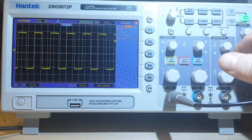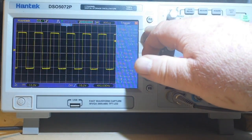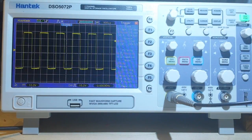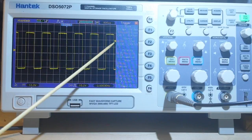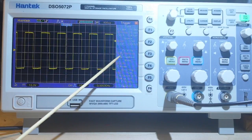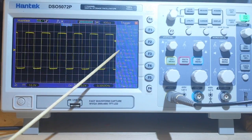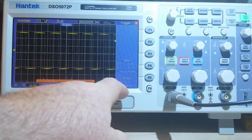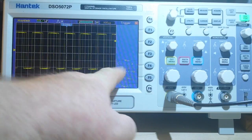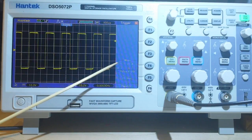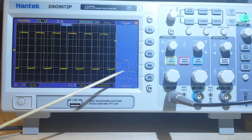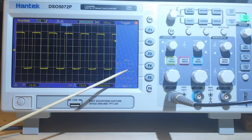And bring up the trigger menu and we're going to select pulse triggering. We're going to trigger on channel 1 and we're going to trigger on a positive pulse. So I'm going to bring up page 2 here where we can select whether we're going to trigger when the pulse width is equal to, not equal to, greater than, or less than the pulse width.